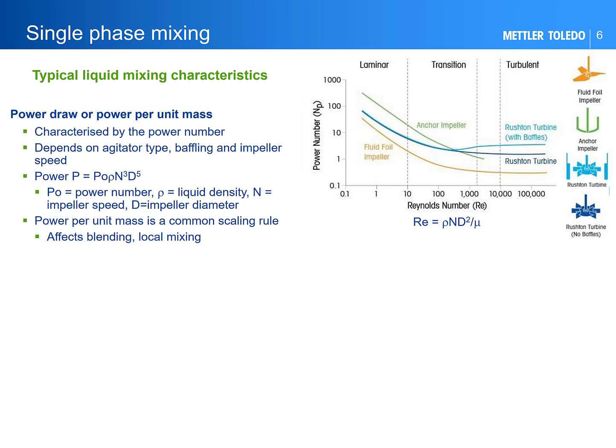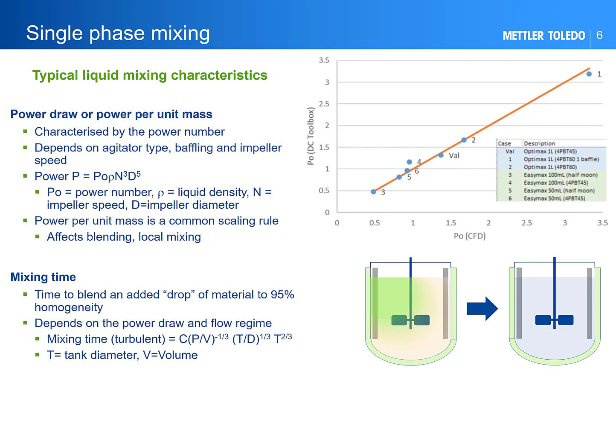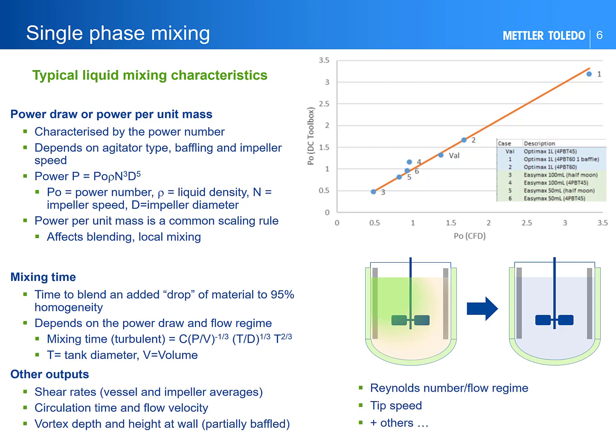Note the strong dependence on scale here — it's diameter to the power of five. Also important is knowing what flow regime we're in, especially in small lab equipment, as turbulent flow promotes mixing. The plot on the top shows the power number versus Reynolds number for different agitators and also shows the flow regime. The parity plot shows comparisons of power number for different OptiMax and EasyMax configurations — the DynaChem toolbox versus CFD comparisons. Torque is too small to measure in these small vessels. We can also calculate mixing time and blending, as well as a range of other outputs such as shear rate, Reynolds number, etc.